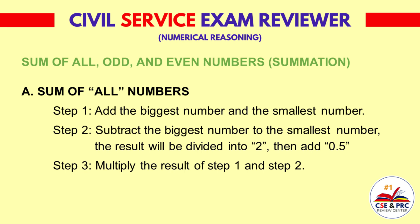Step 1: Add the biggest number and the smallest number. Step 2: Subtract the biggest number from the smallest number. The result will be divided by 2, then add 0.5.